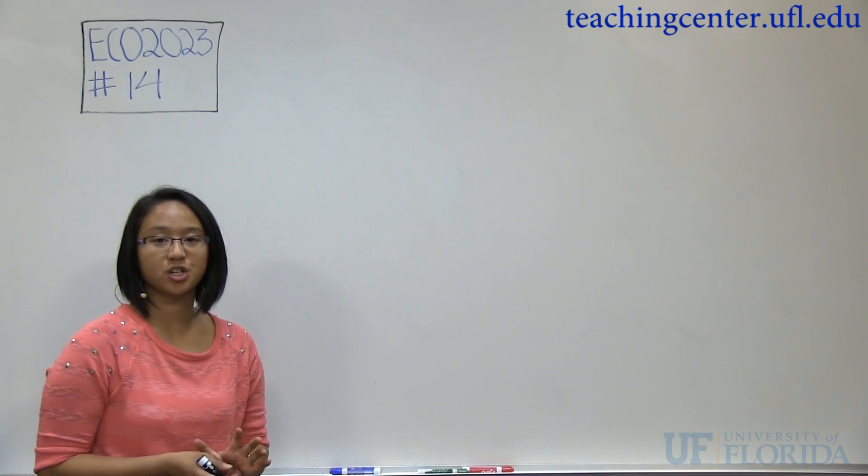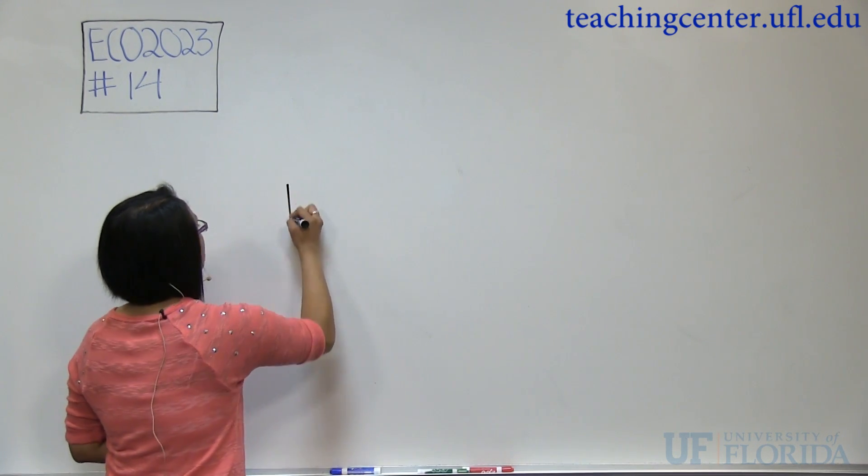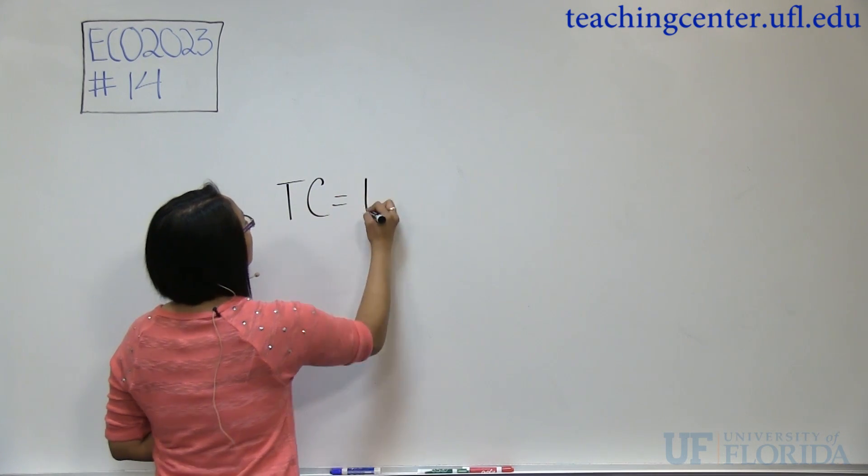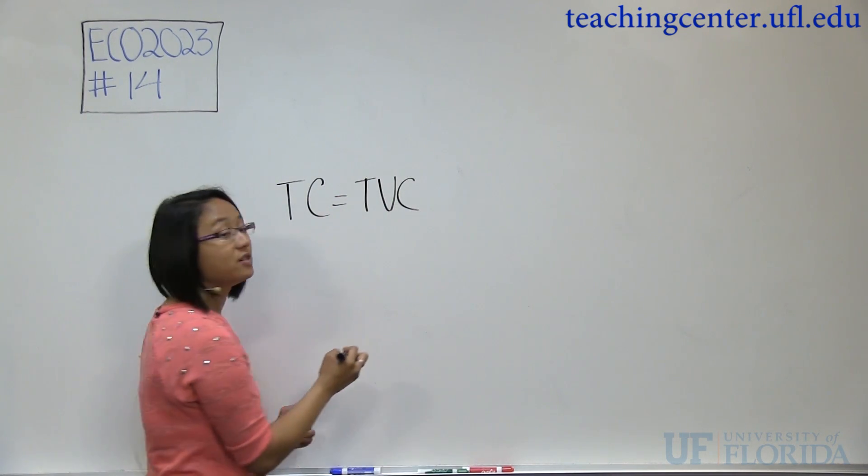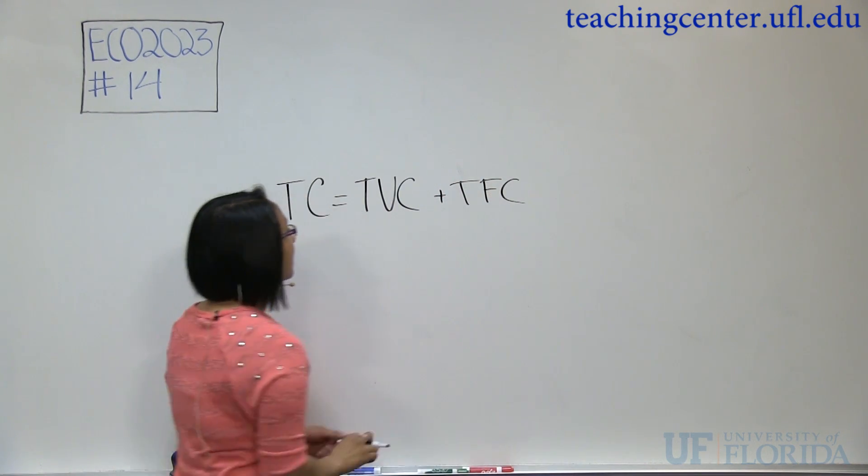So with any of these total cost questions, begin with what you know. You know the basic equation: total cost equals total variable cost, or TVC, plus total fixed cost, or TFC.